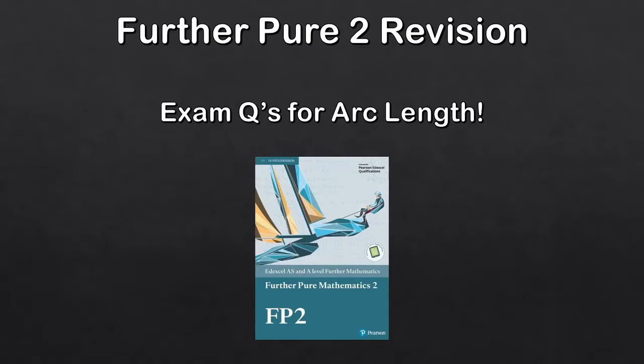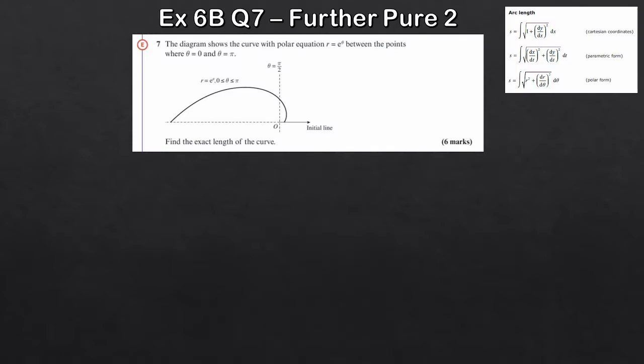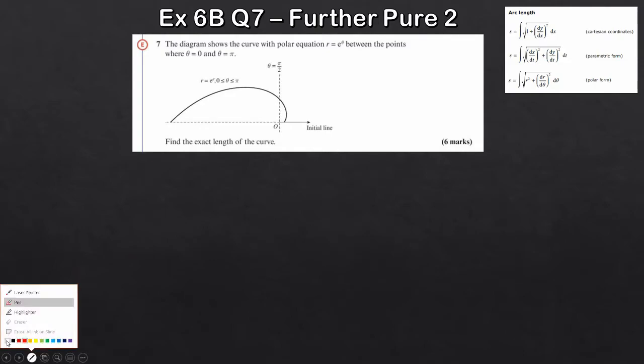Hey guys, welcome to another A-level math review video. Today we're carrying on with some more further pure 2. We're taking a look at the very last chapter here, and one of the little topics within it is arc length. The good news about this topic specifically is we're given the formulas in the back of the formula book, so not too much to worry about — we just need to know how to apply the formulas. Let's take a look at this first question, which is basically with polar form.